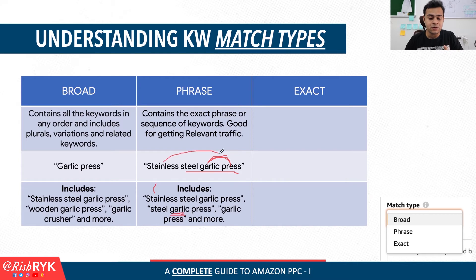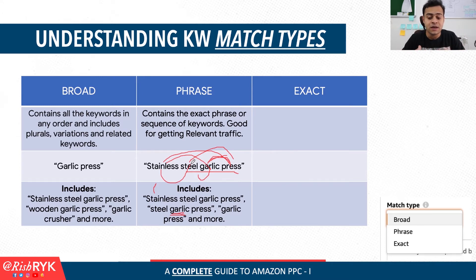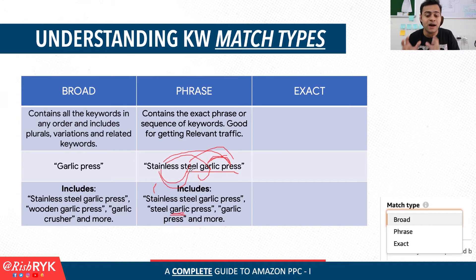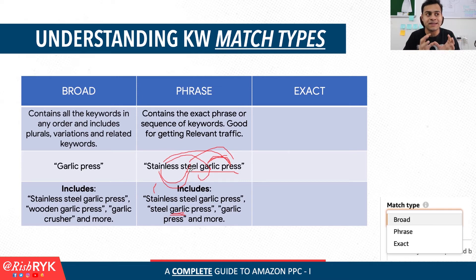Logically, even if you search for 'stainless press,' 'steel press,' 'stainless garlic,' 'steel garlic,' or 'stainless steel,' your ads would still show up. But it might not get conversions because it might not make sense for the customer. For example, if somebody searches for 'stainless steel,' your ads might still show up and the customer can still see the garlic press you're trying to sell — but obviously customers will not buy it. Therefore, you will figure out that 'stainless steel' as an exact keyword needs to go into negative keywords so that you don't lose money for that keyword.